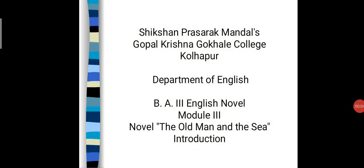Good morning friends. Today we are going to learn the next part — the third part of our paper English novel. Before this part, we learned the general topics: first, the rise and development of the novel, and second, how the aspects of the novel are important for reading and analysis. Now the next part is particularly about the novel 'The Old Man and the Sea,' the prescribed textbook — a novel by Ernest Hemingway.